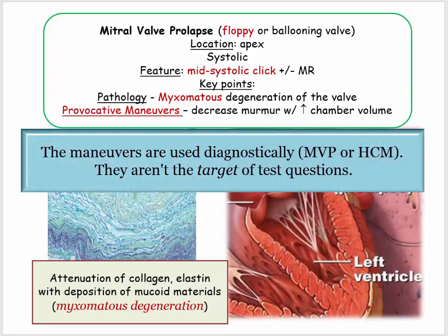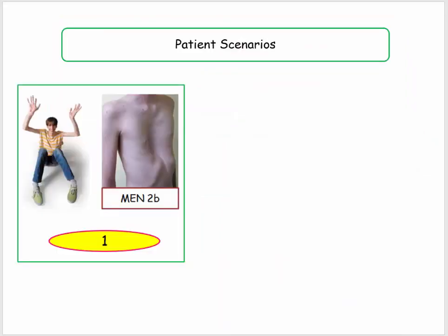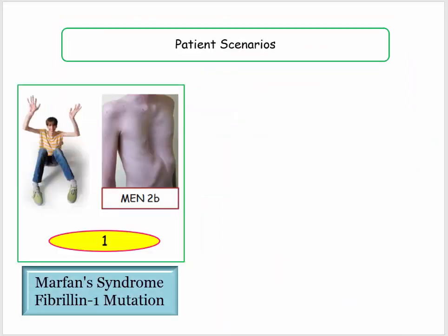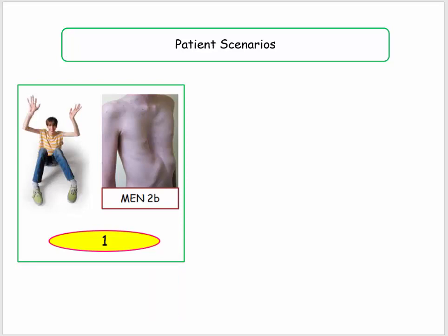Insofar as provocative maneuvers, you will need these to make the diagnosis, but they won't test you on the maneuvers themselves. The first likely patient scenario is a patient with Marfan's. I've also illustrated the marfanoid features in a patient with MEN2 syndrome. In both instances, a click will be described, and if they inquire about mitral valve prolapse, the pathology derivative describing myxomatous degeneration will follow, or possibly an inquiry on the fibrillin mutation associated with Marfan's. Marfan's patients are a major demographic for mitral valve prolapse questions.